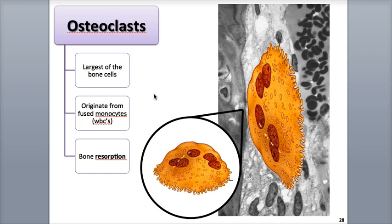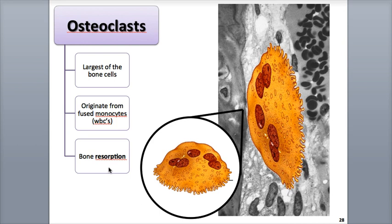Osteoclasts are the largest of the bone cells and are found mostly in the endosteum. They originate as products of the fusion of large numbers of a type of white blood cell called a monocyte. They have a unique shape with the side of the cell membrane facing the bone surface folded into a ruffled border. This large collection of membrane surface area functions in secreting strong enzymes and acids, giving osteoclasts a function opposite to osteoblasts — they break down the collagen and salts of the matrix in a process called bone resorption. You can remember their function by the phrase 'osteoclasts carve out bone.' The osteoclasts' resorption helps in overall bone homeostasis, including maintenance, growth, and repair.